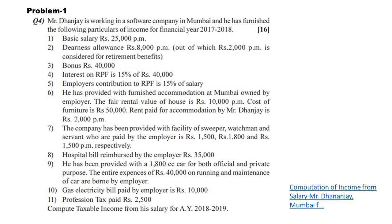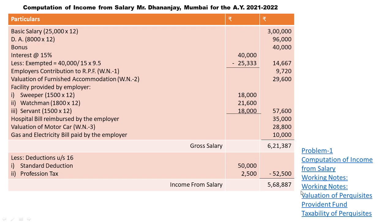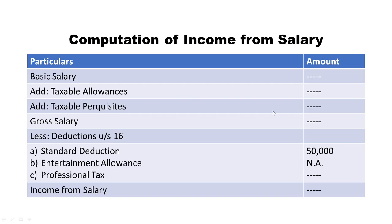Now we are going to solve this problem. First of all, we need to give the heading: 'Computation of Income from Salary of Mr. Dhananjay, Mumbai, for the Assessment Year 2021-2022.' The format includes: basic salary, then add taxable allowances, add taxable perquisites to get gross salary, then deduct deductions under Section 16 — standard deduction of Rs. 50,000, entertainment allowance (not applicable), and professional tax — to get income from salary.